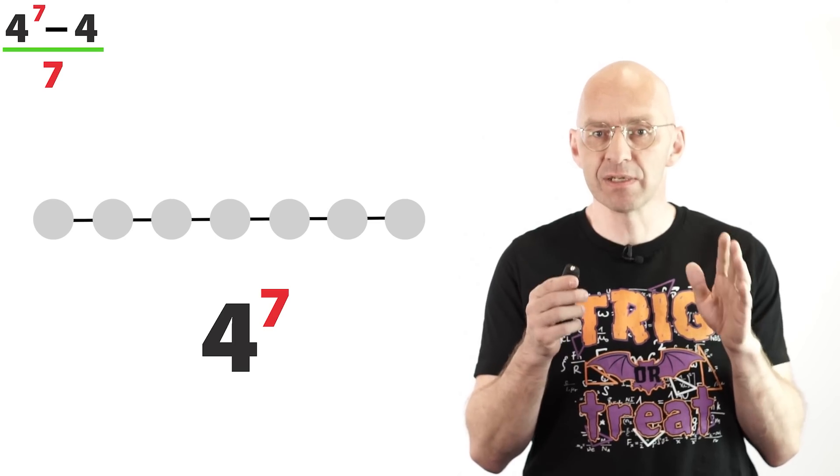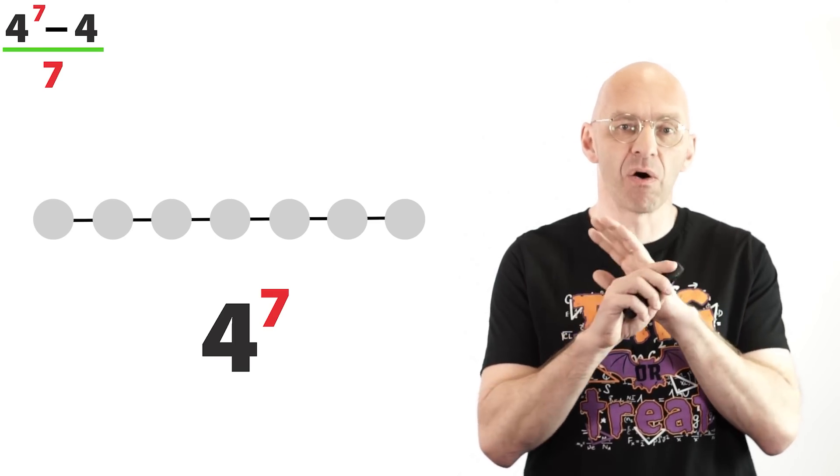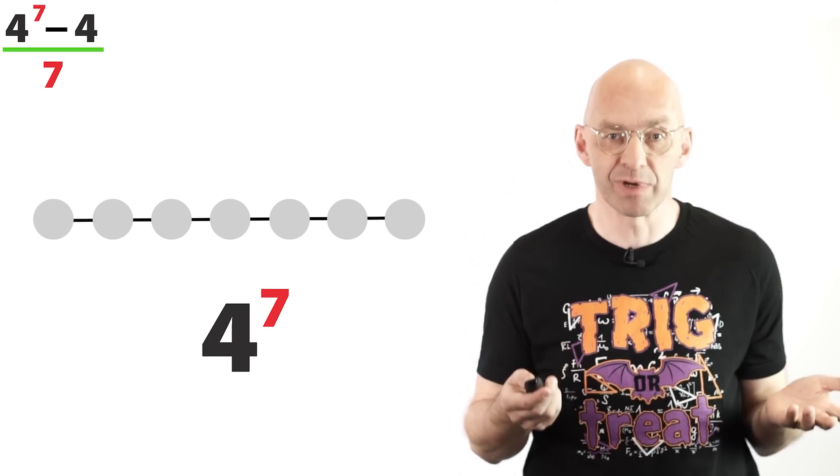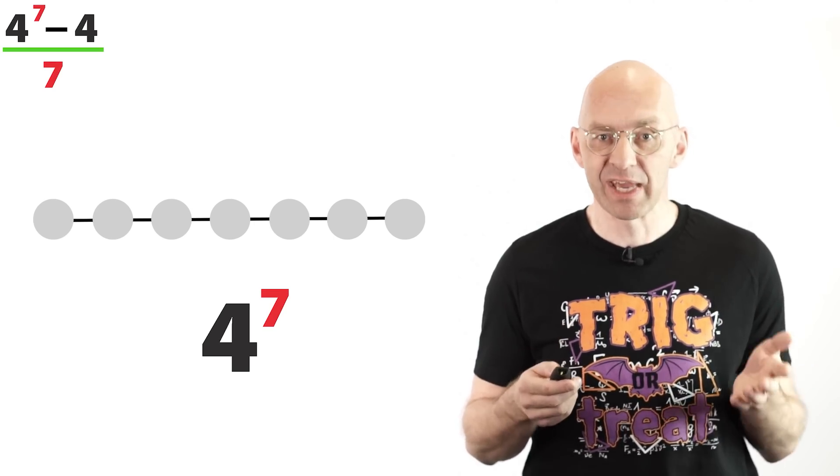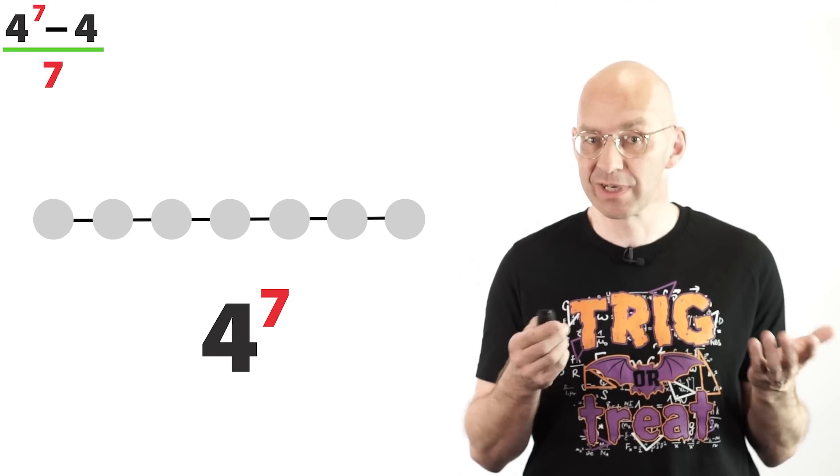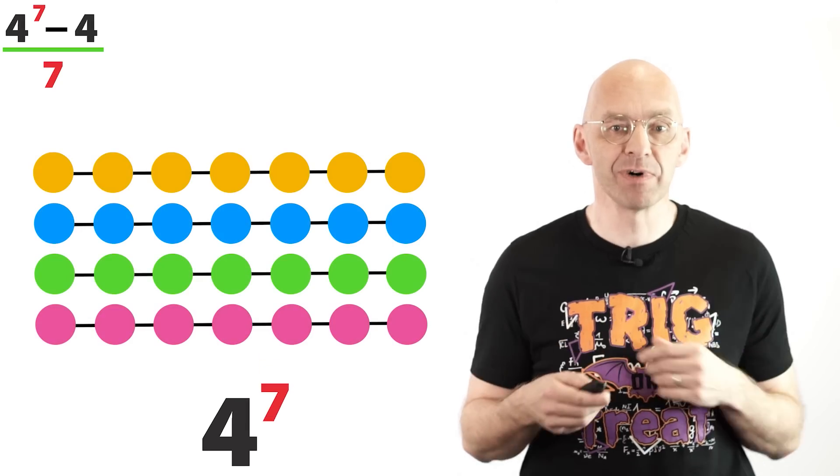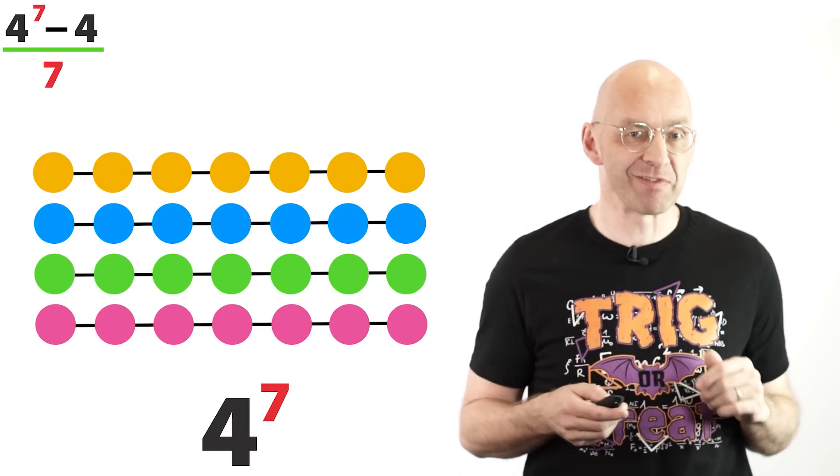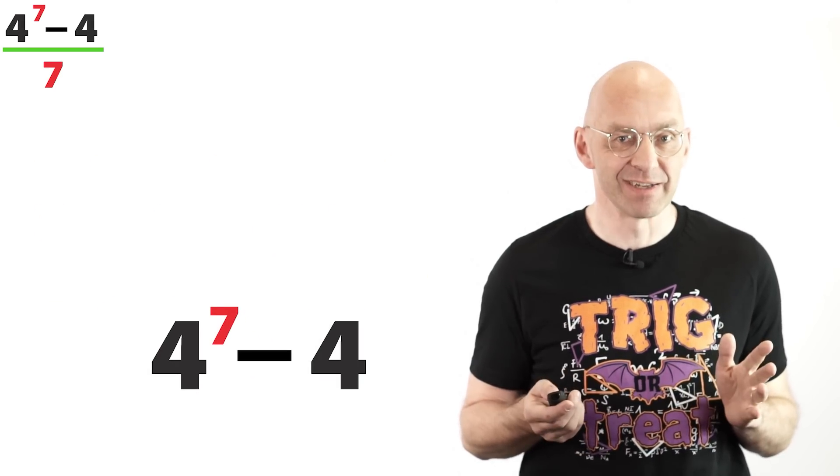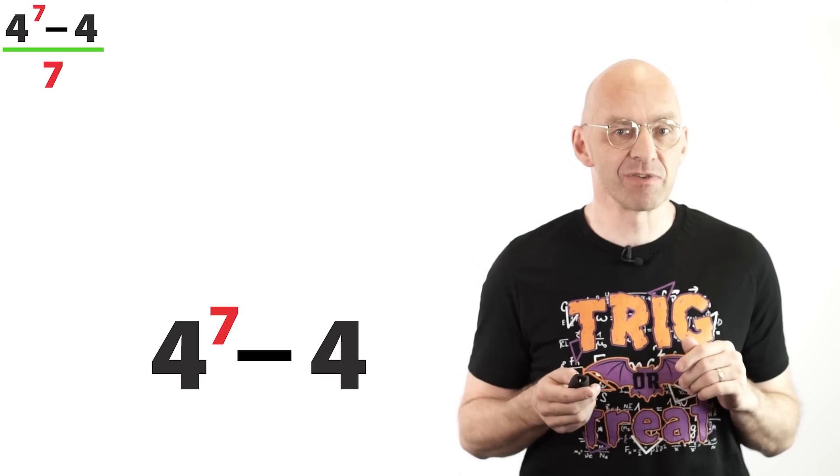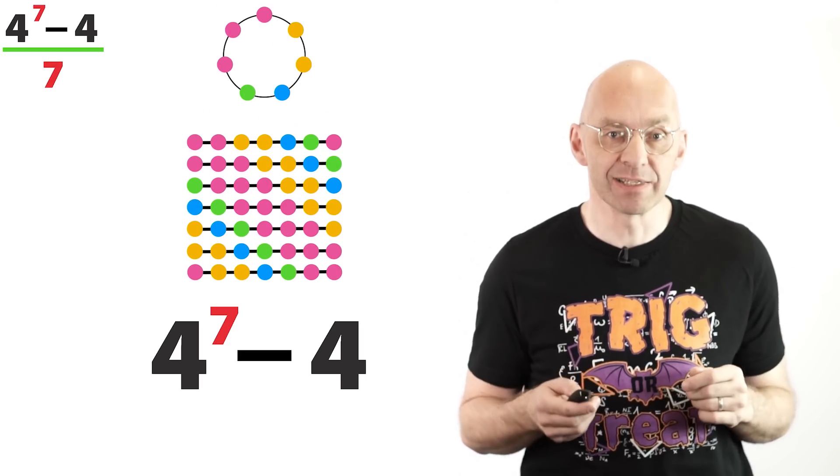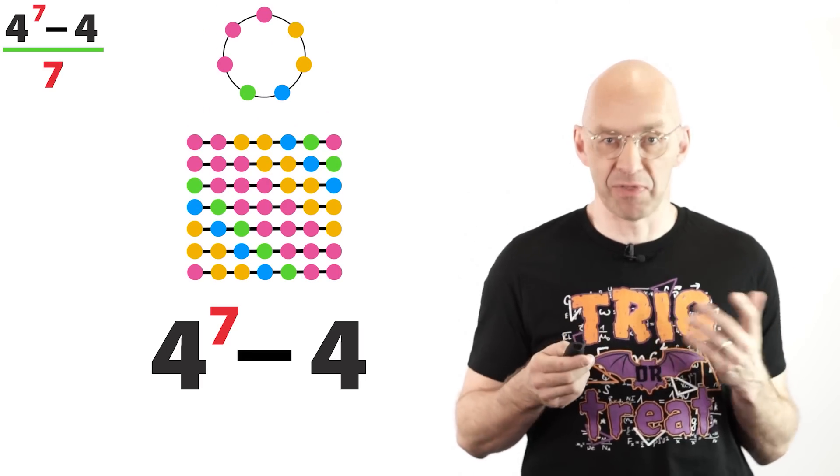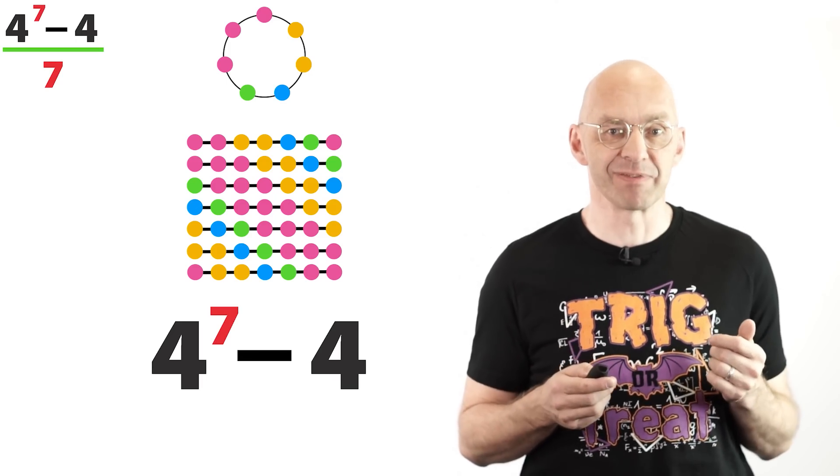Now, remember, we didn't begin with absolutely all necklaces. We left out the boring one color ones, which also means we miss out on the boring one color strings. There are how many of those? four colors. So there's four of those. And so our total number of strings is 4 to the power of 7 minus 4. Almost there. Now, every necklace under consideration also gives rise to seven different strings as in our example. And that means that the number of necklaces we began with is the number down there divided by 7. Ta-da!